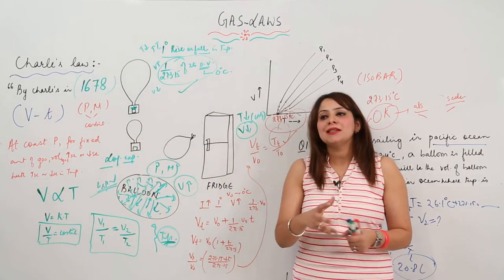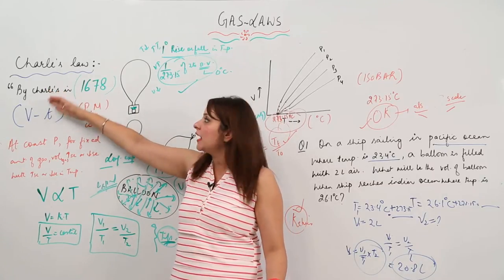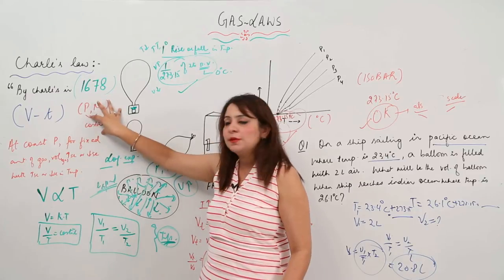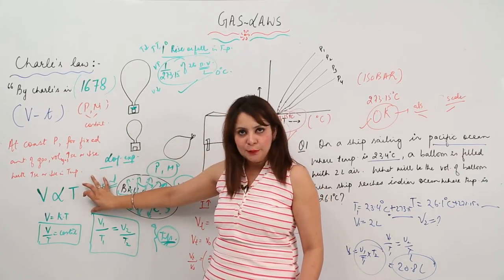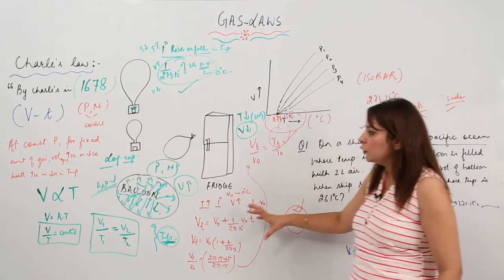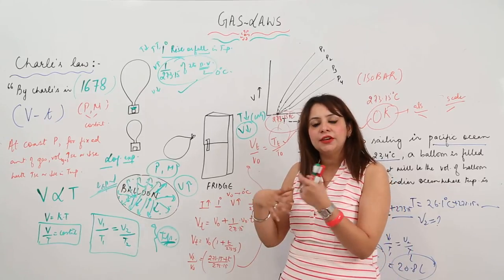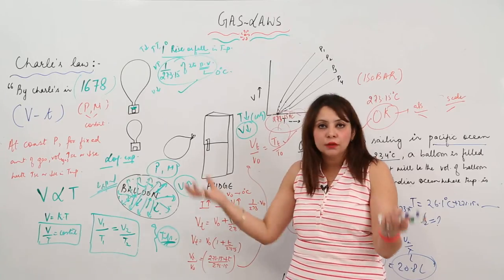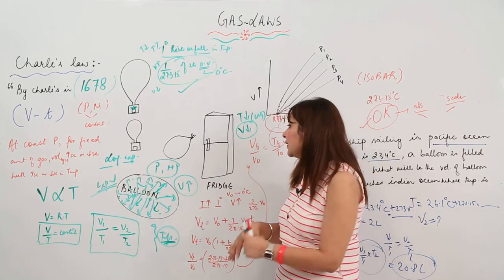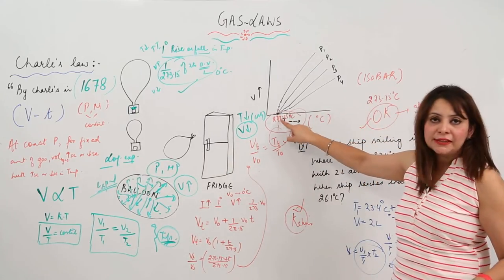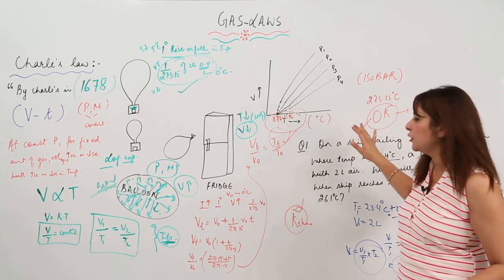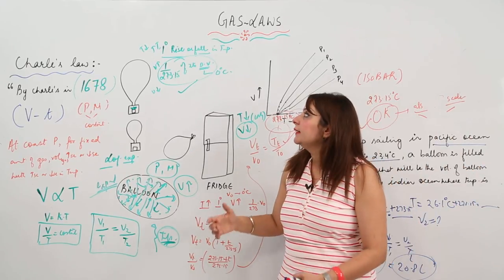To recap Charles's Law: it was given by Charles in 1787; it is a volume-temperature relationship; pressure and mass are kept constant; conclusion — volume is directly proportional to temperature; V1/T1 = V2/T2. The balloon experiment shows that heating increases kinetic energy, particles hit harder, and volume expands. The isobar graph originates at −273.15°C, corresponding to 0 Kelvin — our absolute scale of temperature.